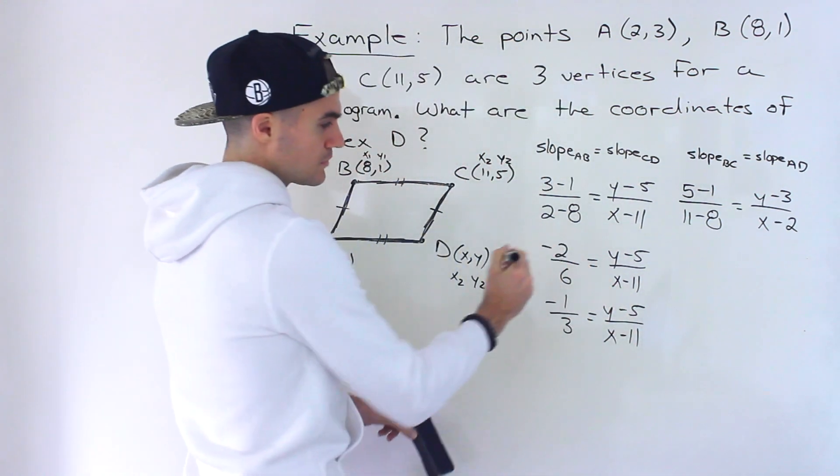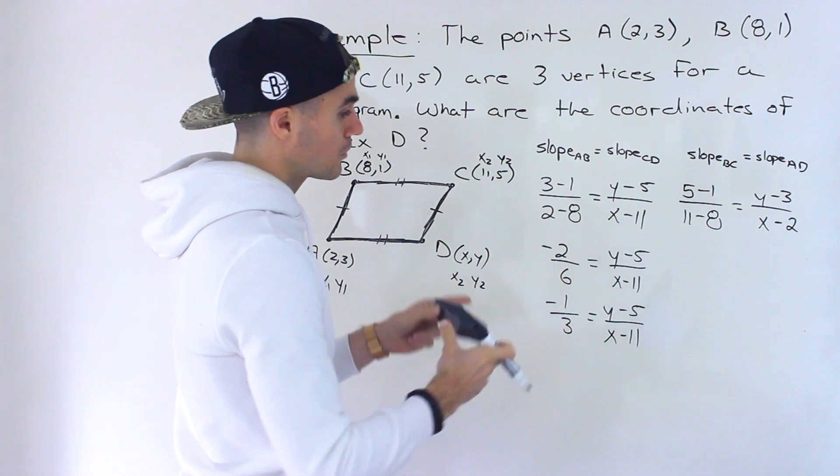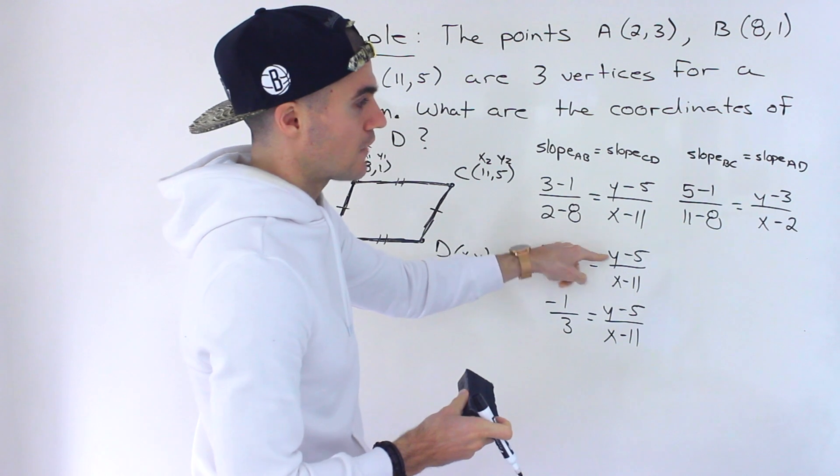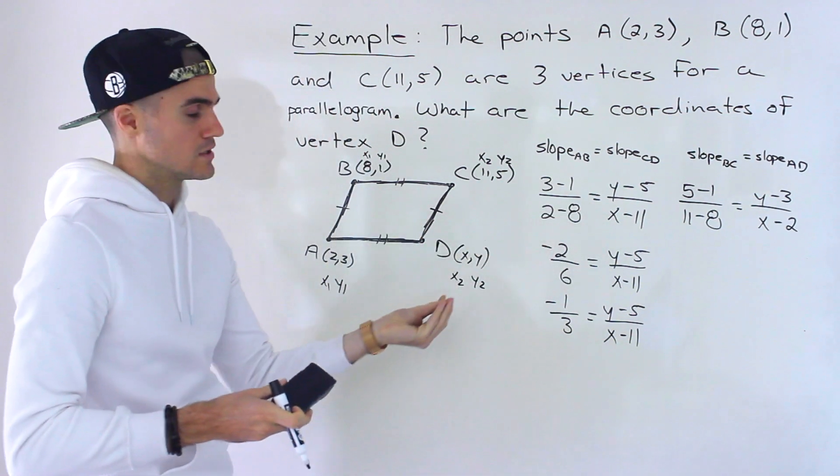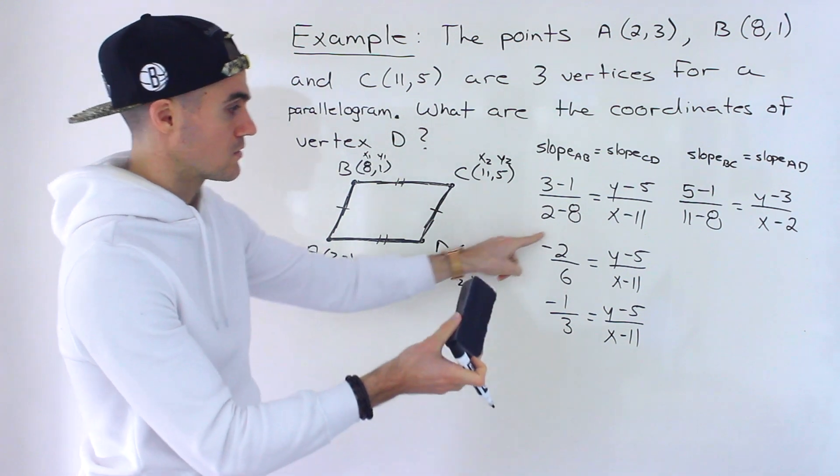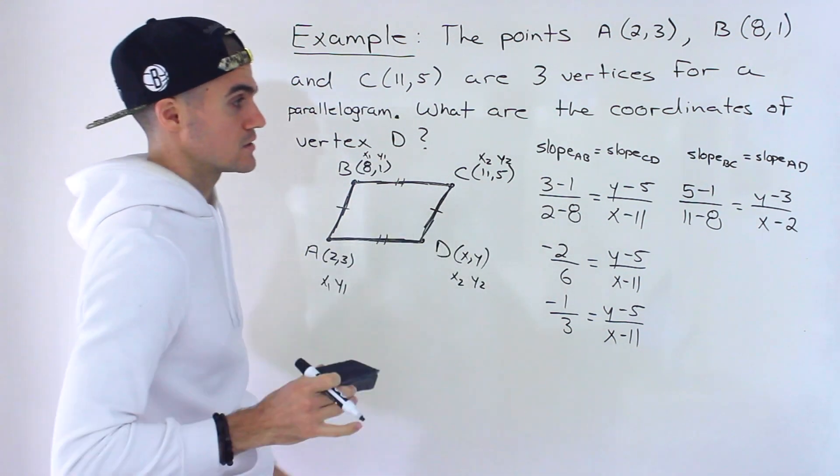Whenever you have a chance to simplify, you want to take it. It actually doesn't matter if you didn't simplify here and then you end up working through the algebra. What we're going to end up doing is cross-multiplying. So even if you cross-multiplied here, it would be fine. You would still get the same solution in the end. It's just you would have to simplify more in the end. So better to simplify initially to have less simplifying to do later on.